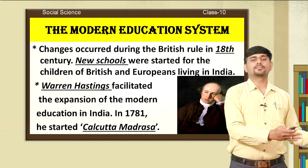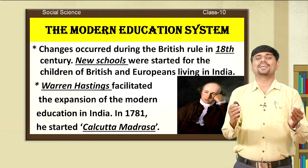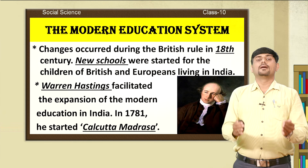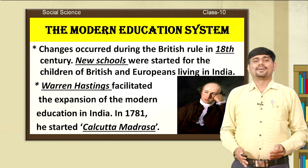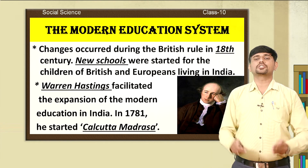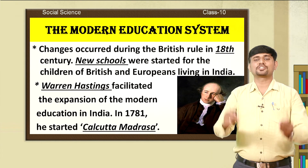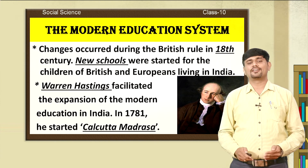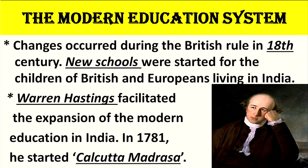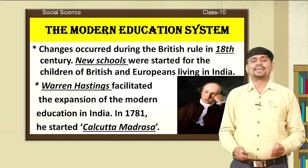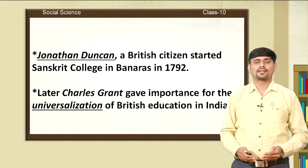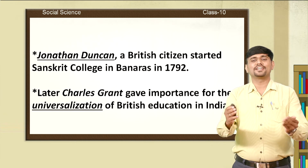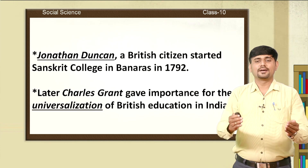Let us study the next concept — the modern education system. There were several changes that occurred during the British rule in the 18th century to the education system of India. New schools were started for the children of British and Europeans living in India. Warren Hastings facilitated the expansion of modern education in India — in 1781 he started the Calcutta Madrasa for the first time. Later on, Jonathan Duncan, a British citizen, started a Sanskrit college in Banaras in the year 1792.